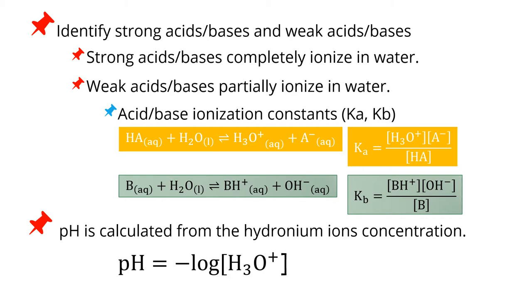First, you need to be able to identify strong acid or base from weak acid or base. Strong acid and base completely ionize in water, whereas weak acid and base partially ionize in water. Because of this partial ionization, we can derive the acid and base ionization constants, Ka and Kb. This is the equilibrium of the weak acid.